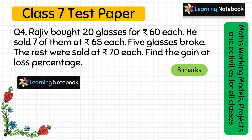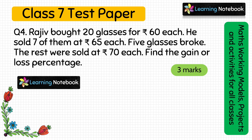Question number 4: Rajiv bought 20 glasses for Rs. 60 each. He sold 7 of them at Rs. 65 each. 5 glasses broke and the rest were sold at Rs. 70 each. Find the gain or loss percentage. We have been told 20 glasses are bought at Rs. 60 each, some sold at Rs. 65, some at Rs. 70, and 5 broke — find whether Rajiv gained or lost and the percentage. This question is of 3 marks.